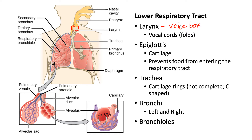Just as the larynx has cartilage, so does the trachea. You can see in this image these ring-looking structures — the trachea is composed of cartilaginous rings. These aren't solid; in other words, they're not around the entire circumference. They're sort of C-shaped rings. The point of this is to prevent the airway from collapsing — it has a little rigidity to keep the airway open.